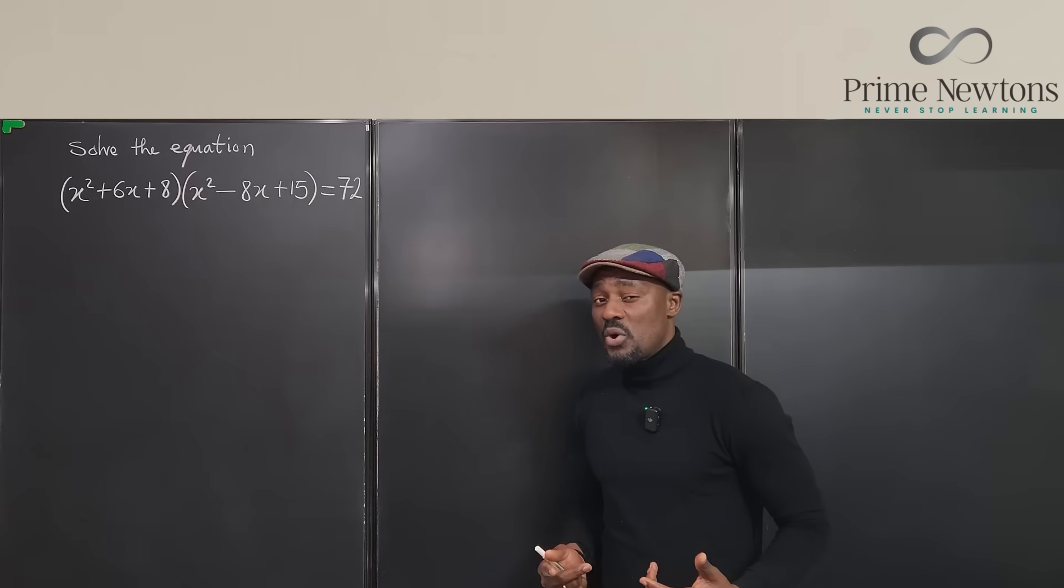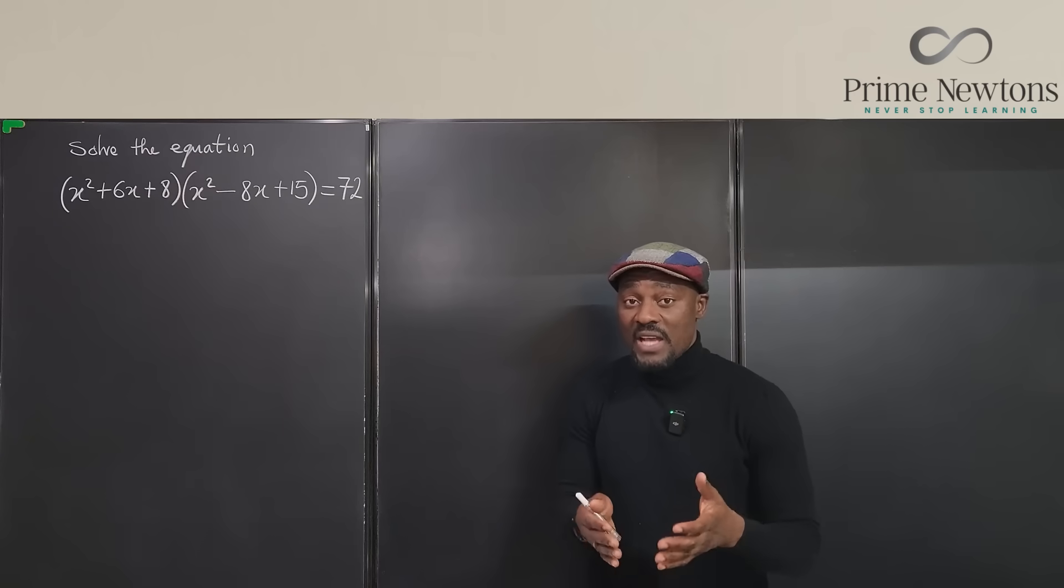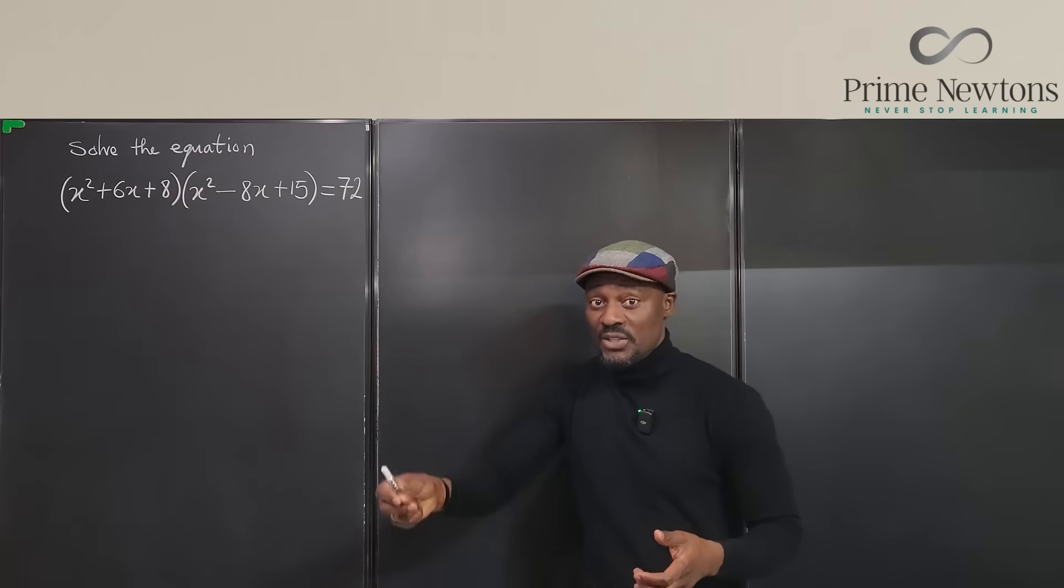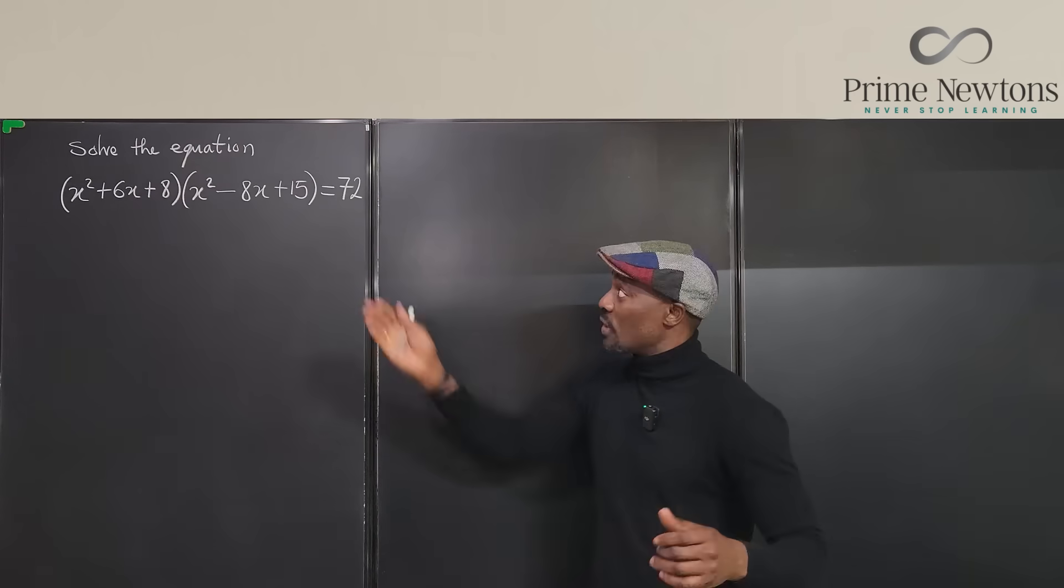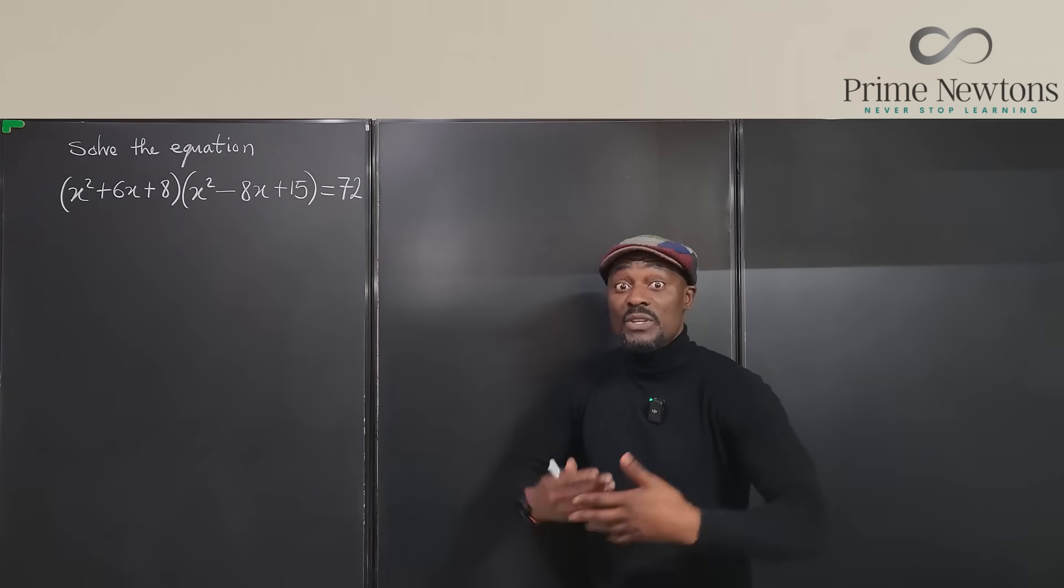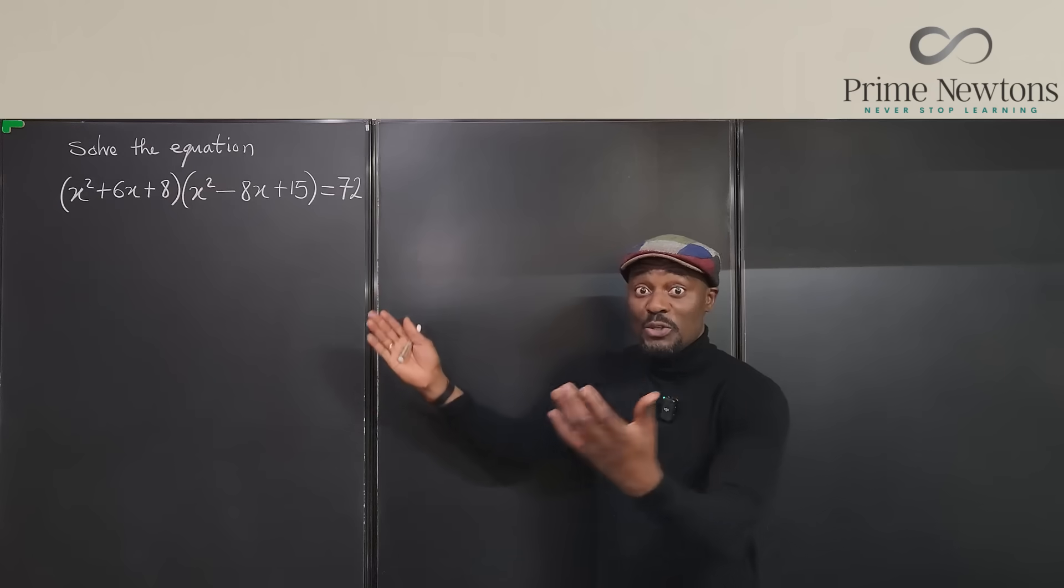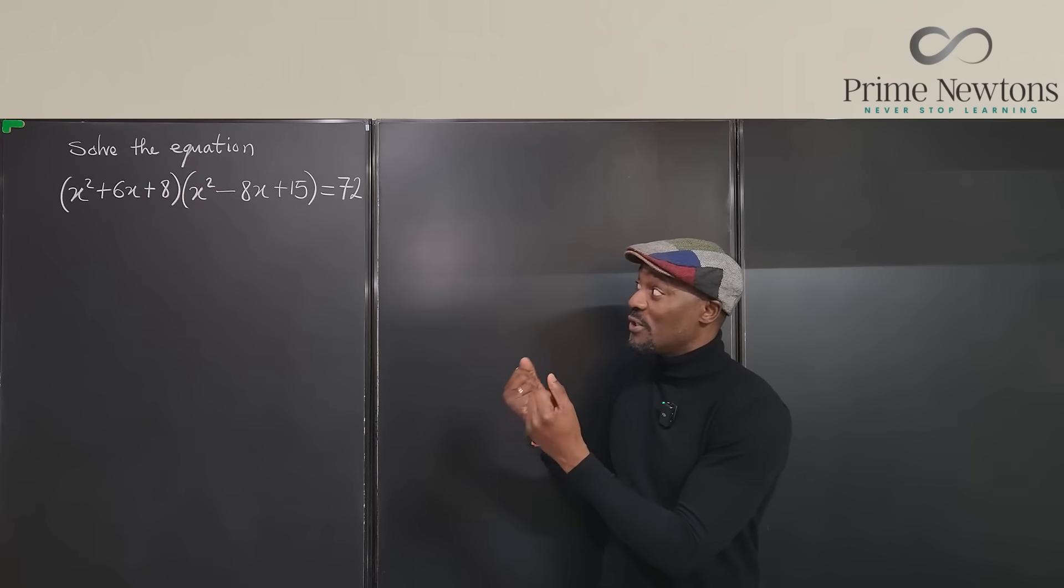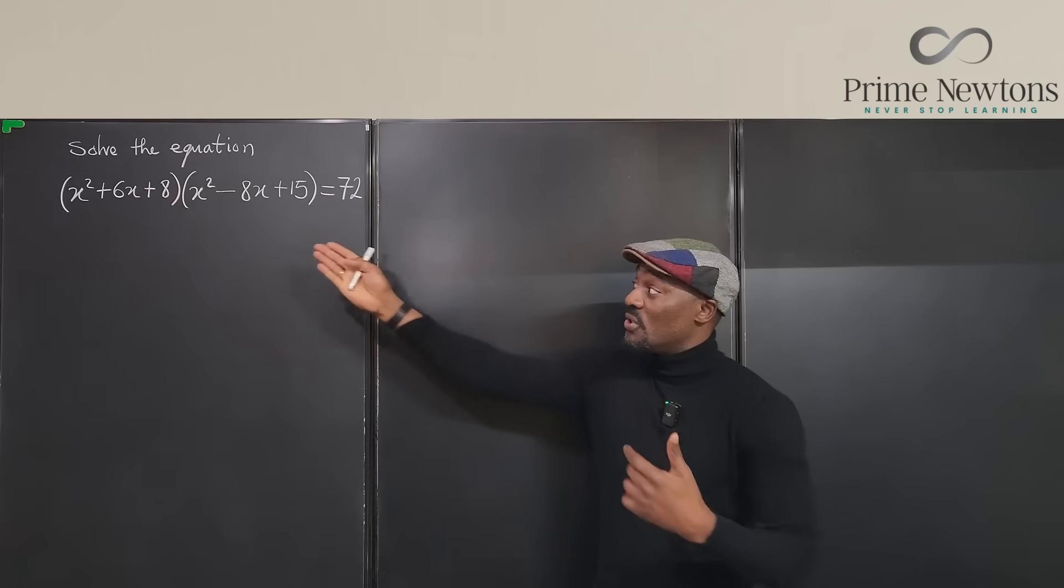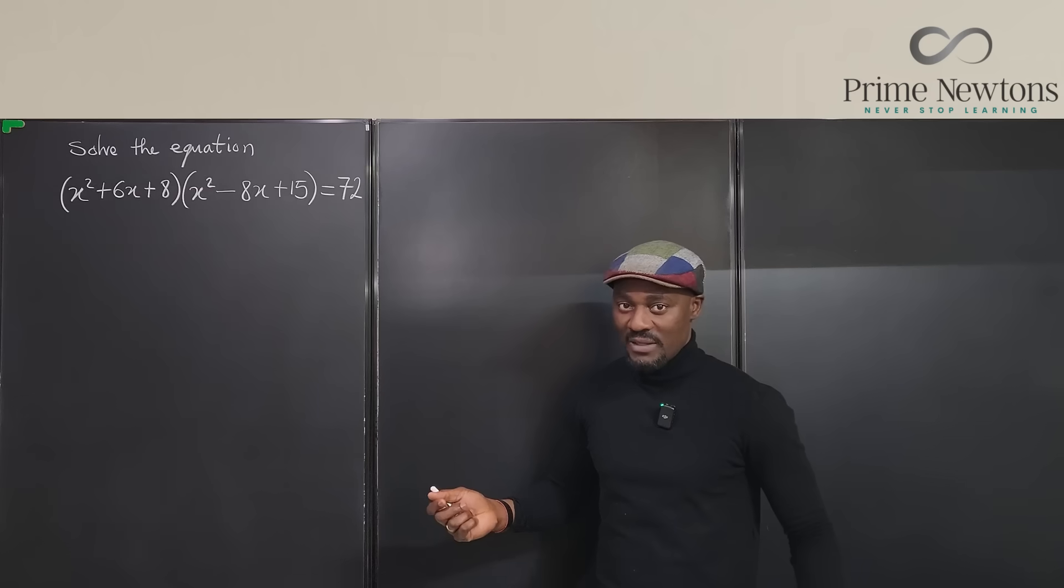So when you get a problem like this and you know you cannot use the zero products property, and it is not like a Diophantine equation where they're asking you to solve for only integers, you're just asked to solve the equation, then it means some of your answers may even not be real. Some of the answers may be irrational, but you don't know anything about it.